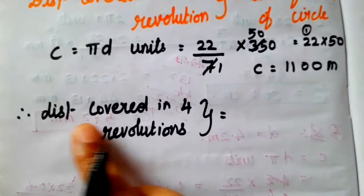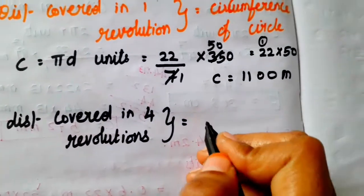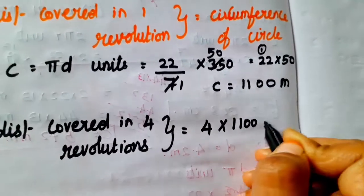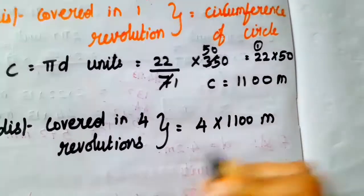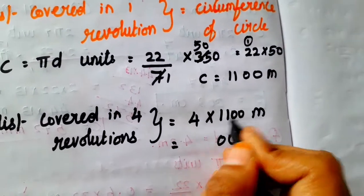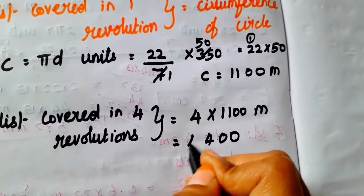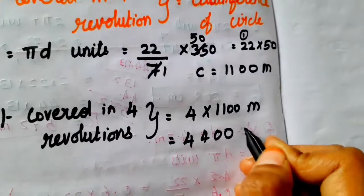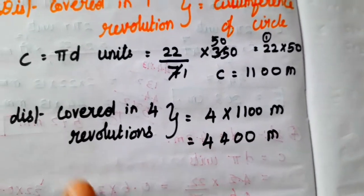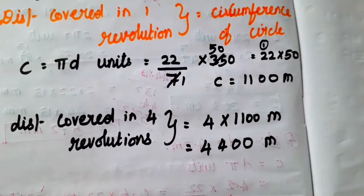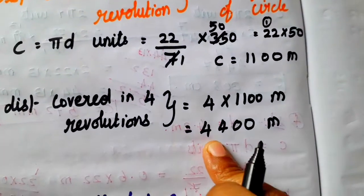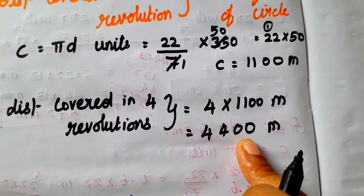Therefore, distance covered in 4 revolutions is equal to 4 into 1,100 meter. 4 into 0 is 0, 4 into 0 is 0, 1 into 4 is 4, 1 into 4 is 4. So the answer is 4,400 meters. The athlete running 4 times around the circular ground covers 4,400 meters.